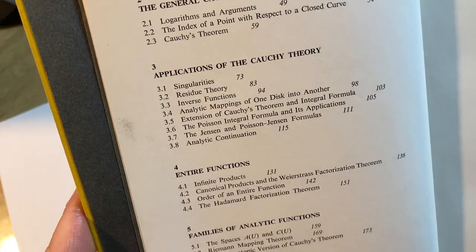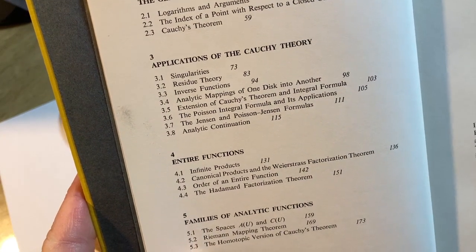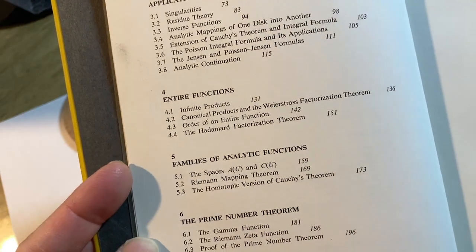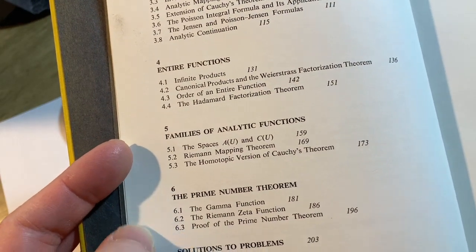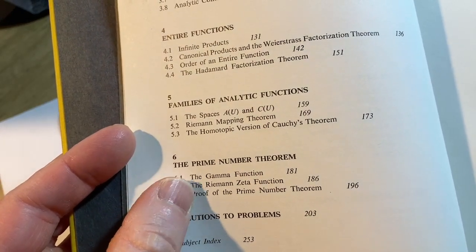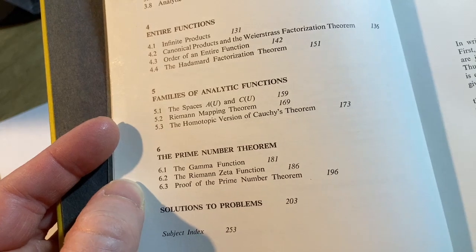The general Cauchy theorem, applications of the Cauchy theory, entire functions, look, infinite products, and families of analytic functions. The prime number theorem, look, it's got an entire section on the Riemann zeta function. Wow. And solutions to problems on page 203.